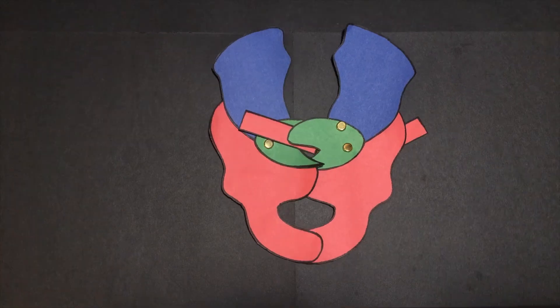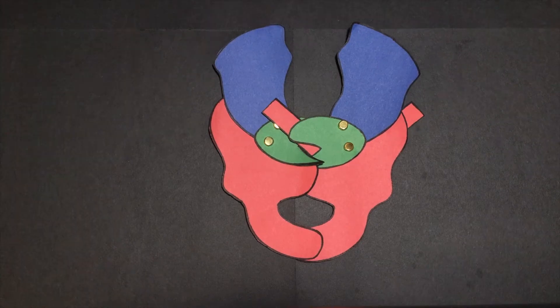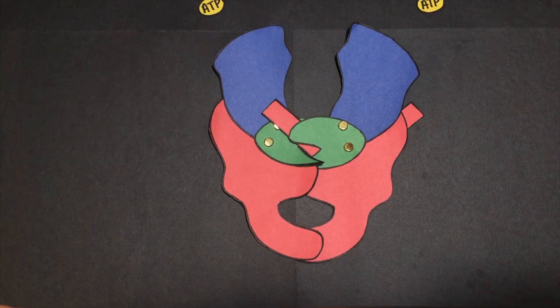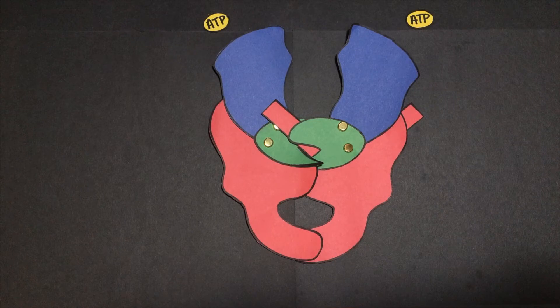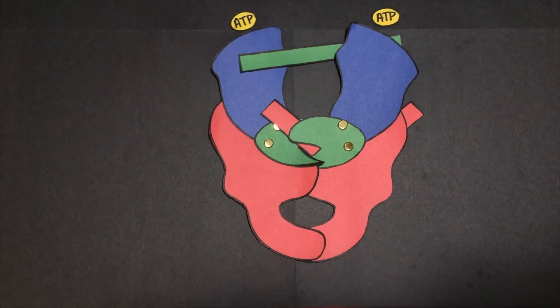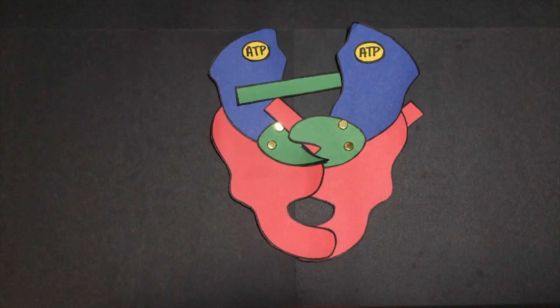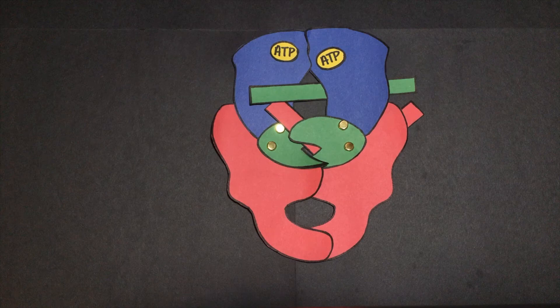As mentioned before, the intercalating isoleucines from each subunit wedge into the DNA to create this conformation. The N gate contains an ATPase region, and ATP binding here triggers the binding of a second DNA duplex at the N gate. Binding of ATP also causes the previously separated N gates to dimerize and close, locking in the second duplex. The second duplex is called the T segment for transport segment.